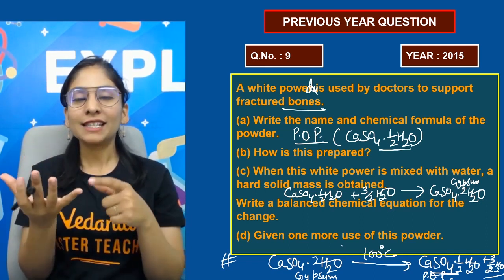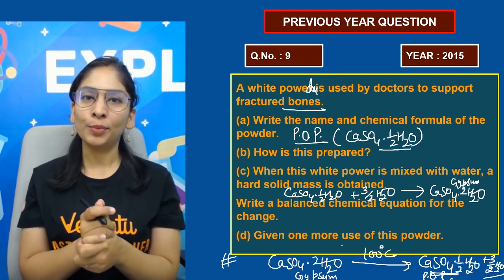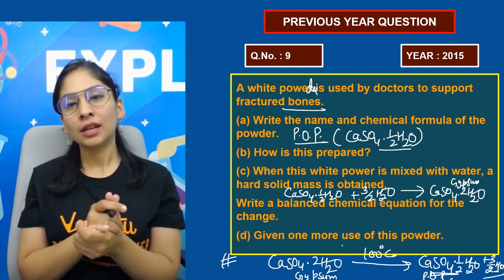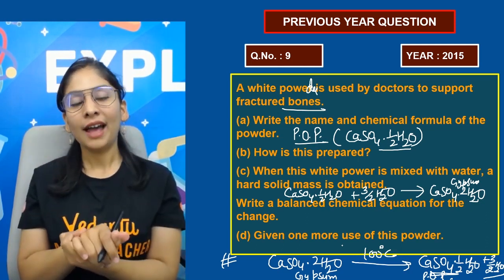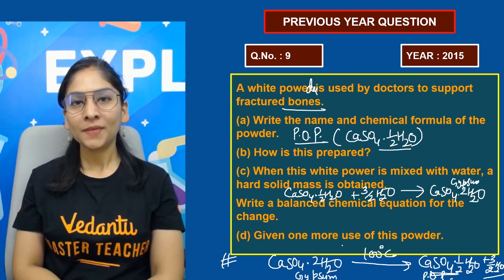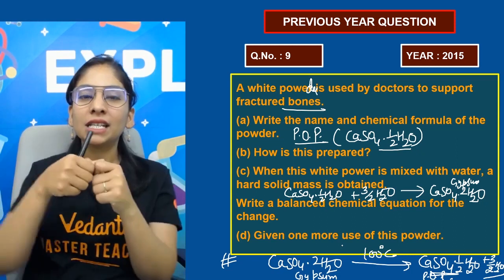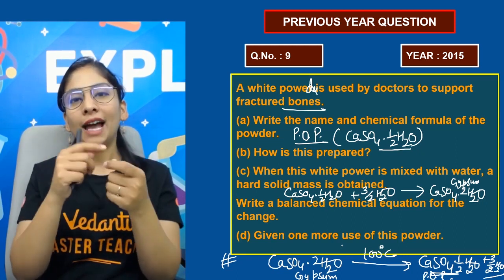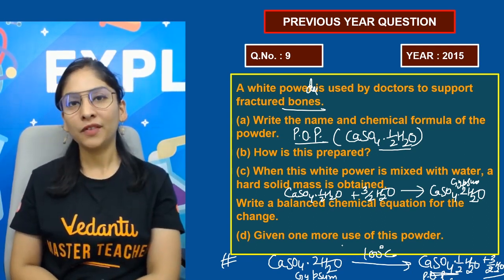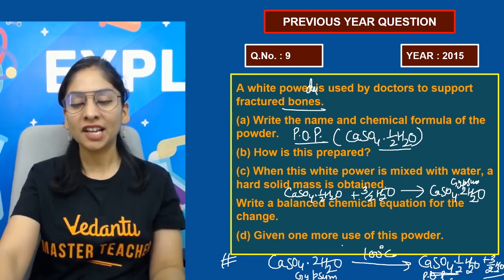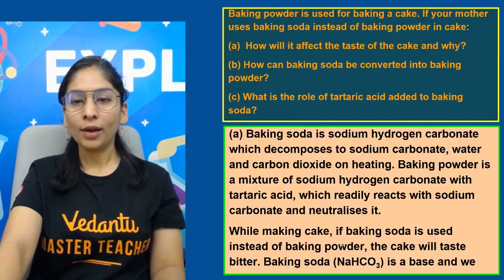Give one more use of Plaster of Paris. POP is used to make casts for statues — for example during Durga Puja and Ganesh Puja. It is also used for decorative false-ceiling designs in homes, and in laboratories to seal air gaps and make containers airtight.